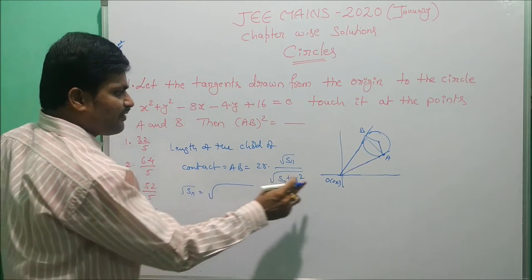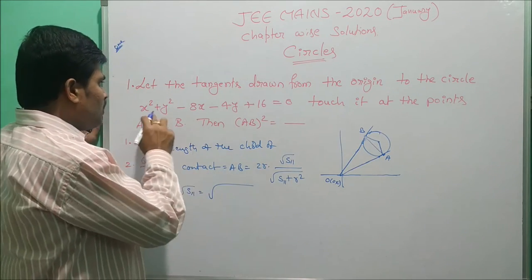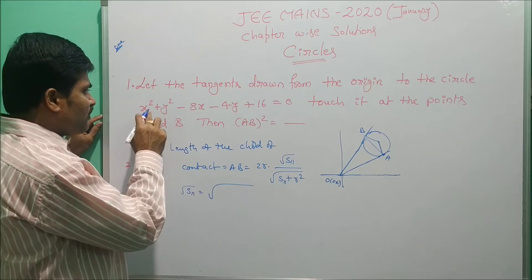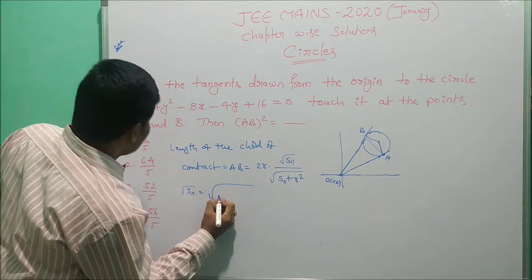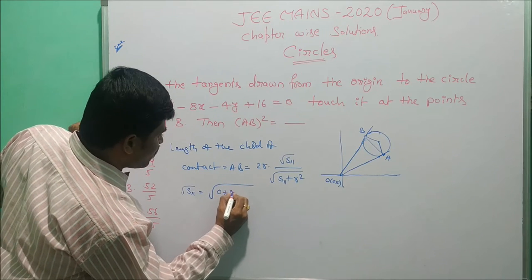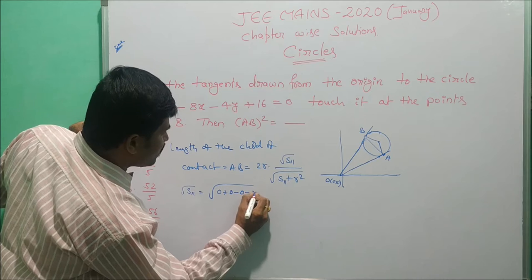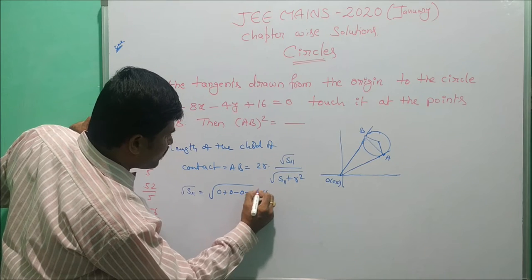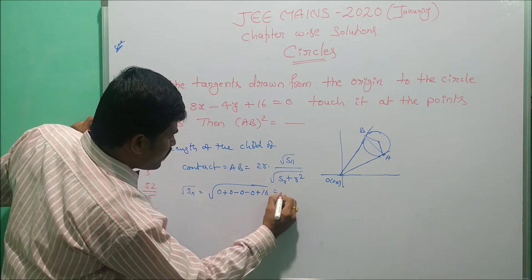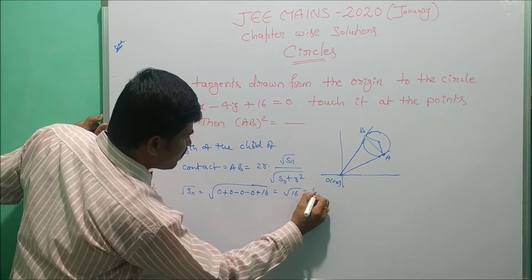Here √S₁₁ equals √(x₁² + y₁² - 8x₁ - 4y₁ + 16) where (x₁, y₁) is (0, 0). So √S₁₁ = √(0 + 0 - 0 - 0 + 16) = √16 = 4. This is the length of the tangent.